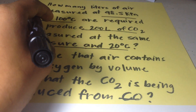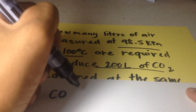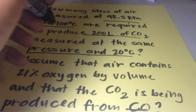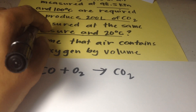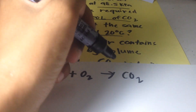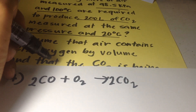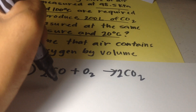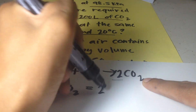Carbon monoxide burns with oxygen gas. So carbon monoxide plus oxygen gas reacts to produce carbon dioxide. This is not balanced yet, so we put a coefficient of 2 for CO and 2 for CO₂. Now it's completely balanced. From the balanced equation, 1 liter of oxygen gas equals 2 liters of carbon dioxide.